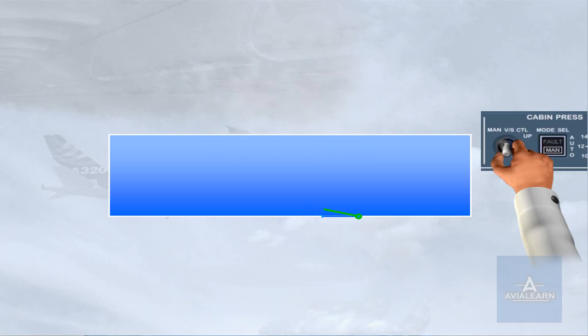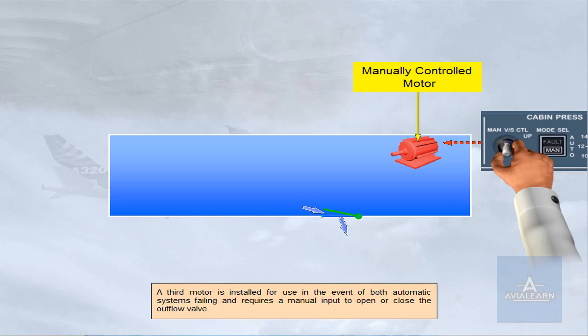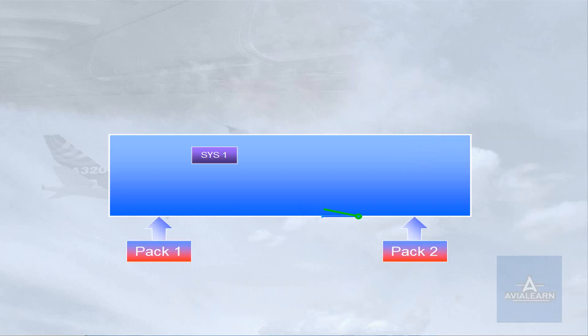A third motor is installed for use in the event of both automatic systems failing, and requires a manual input to open or close the outflow valve. To avoid excessive cabin differential pressure, safety valves are installed.